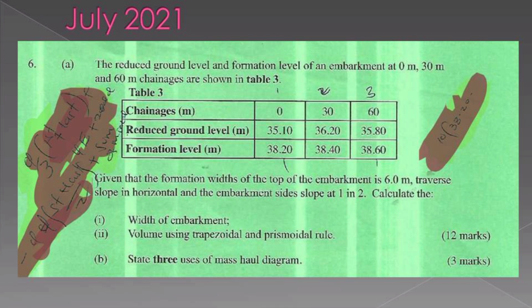Calculate the following: first, the width of the embankment; second, the volume using trapezoidal and prismoidal rule.